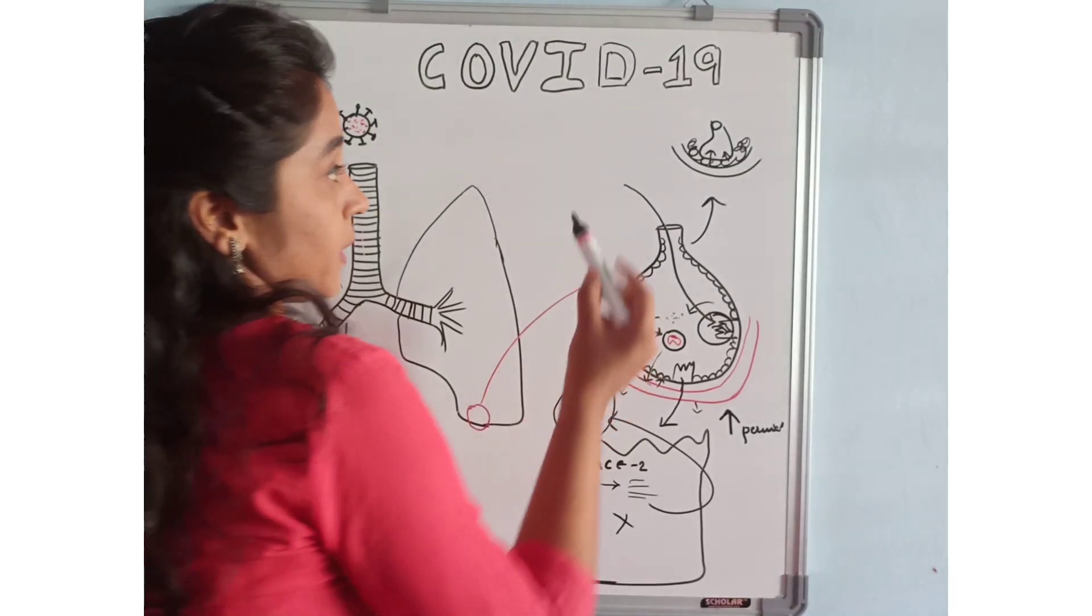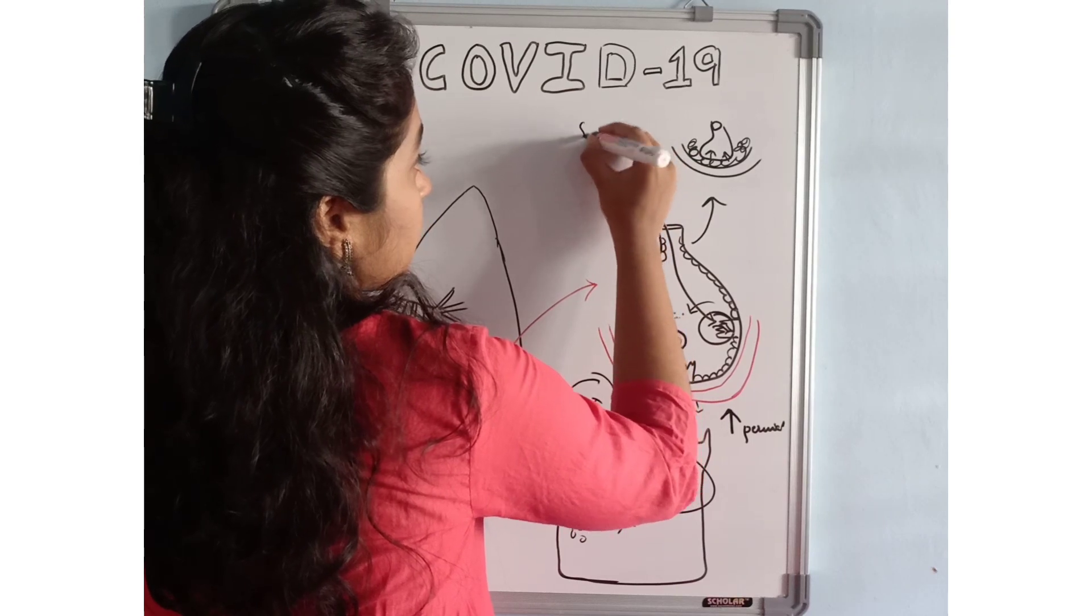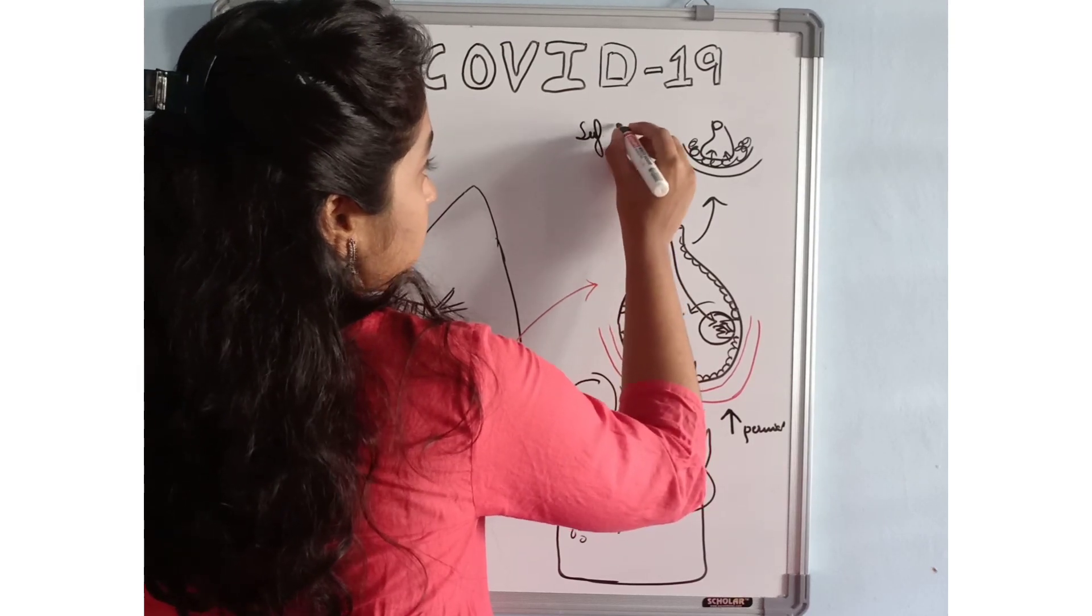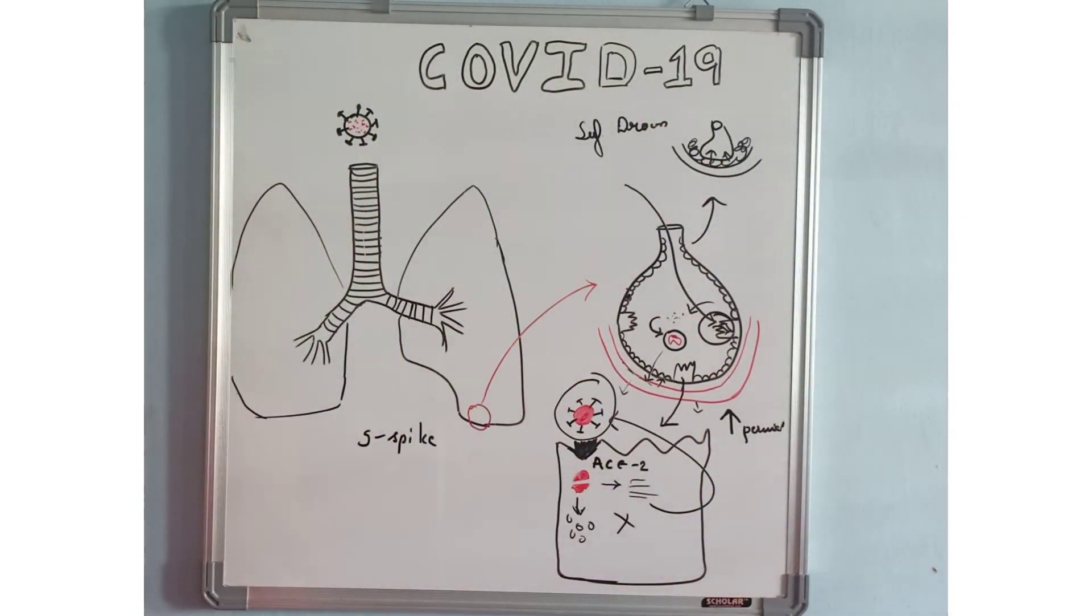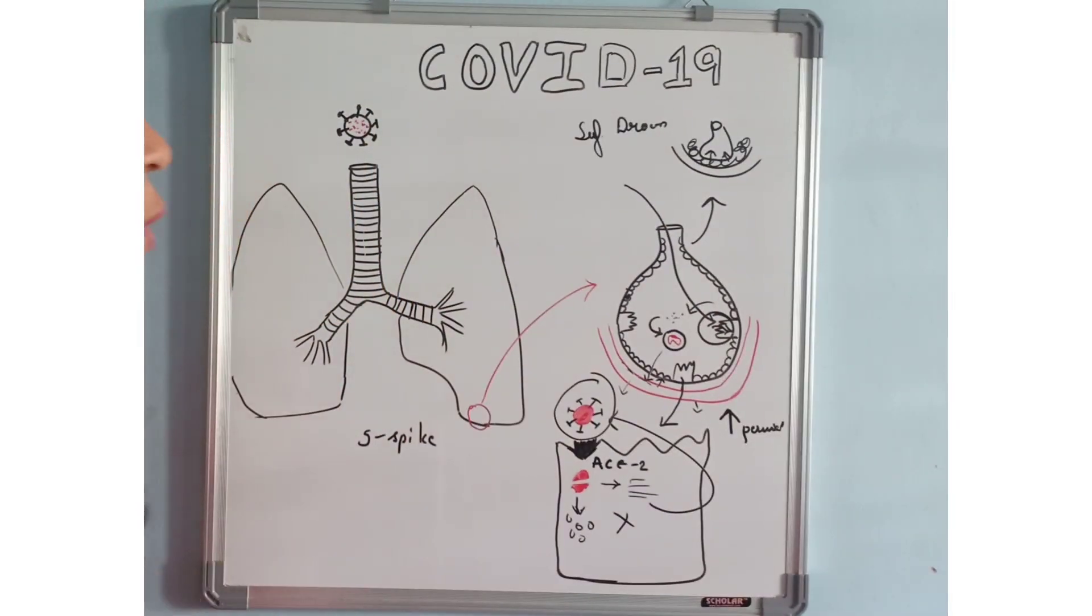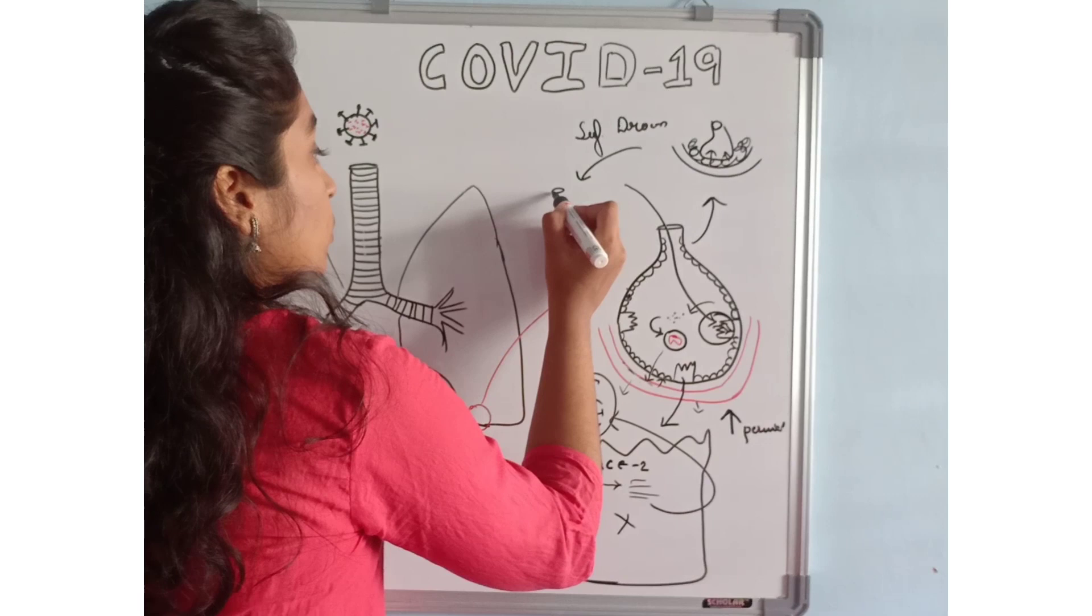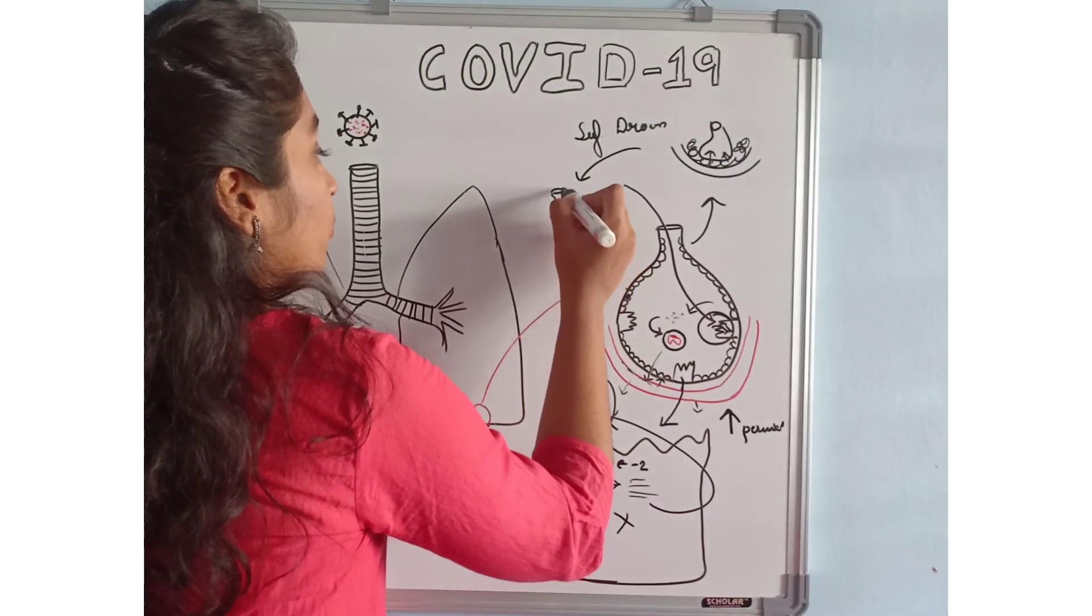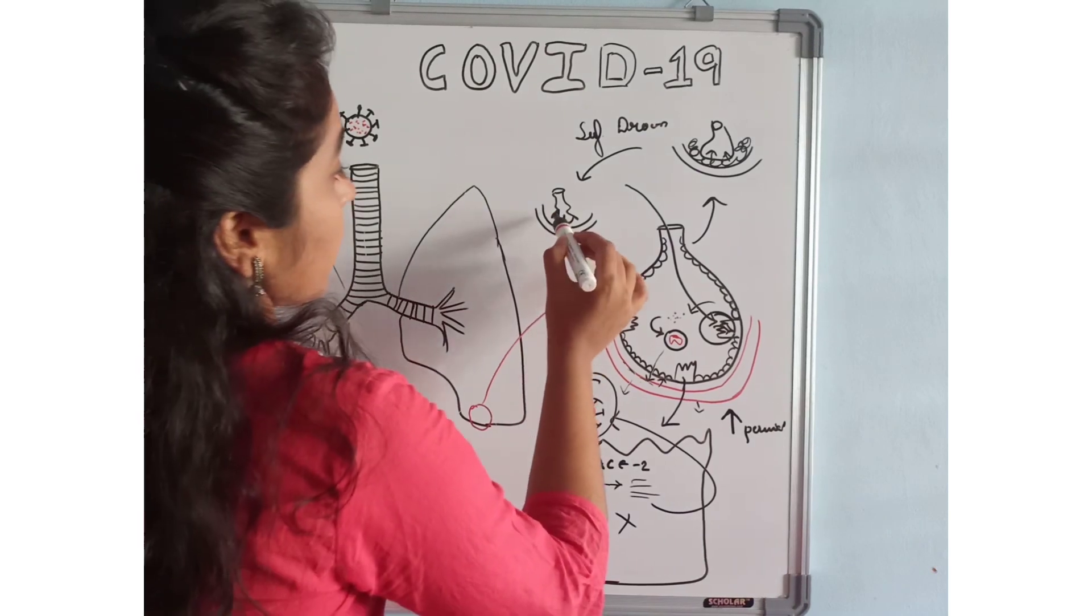What happens is the surfactant and the surface tension of the alveoli increases. As the pressure increases, the surface tension increases, and that will lead to collapse of our alveoli.